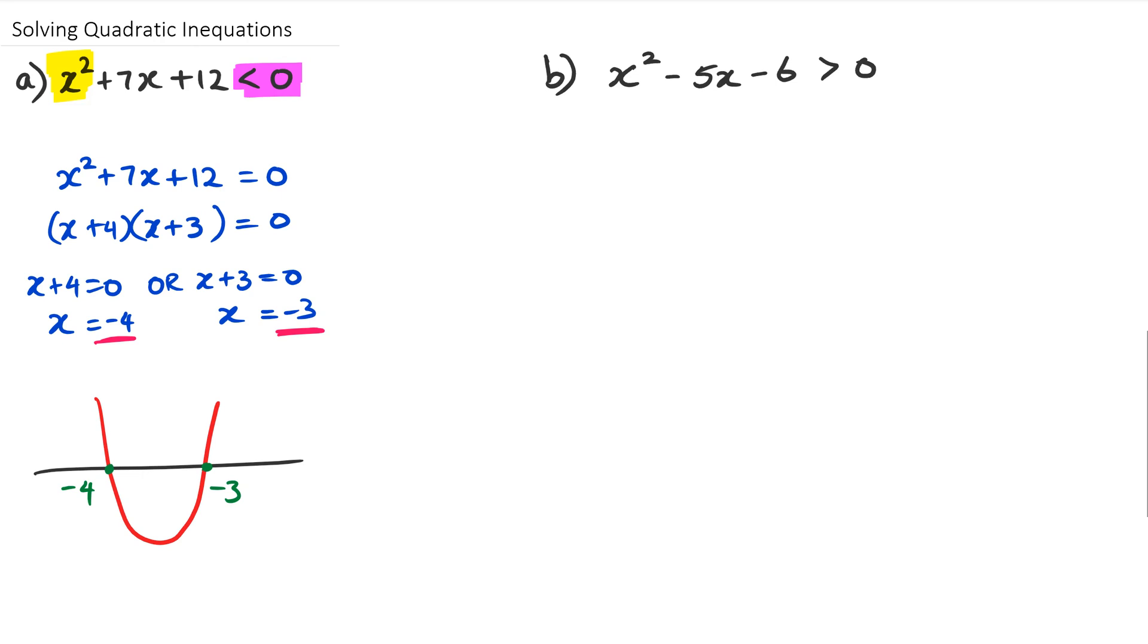Now if you look at that part that I've actually highlighted in pink where it says less than zero, when is this parabola less than zero? Now we know that the x-axis is where the y-value is equal to zero. So if you think about it like this, this is the x-axis, but we know that the value of y along the x-axis is zero.